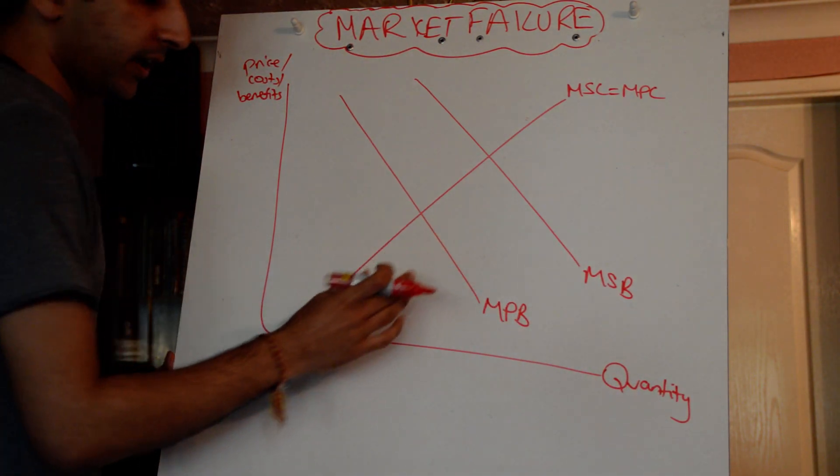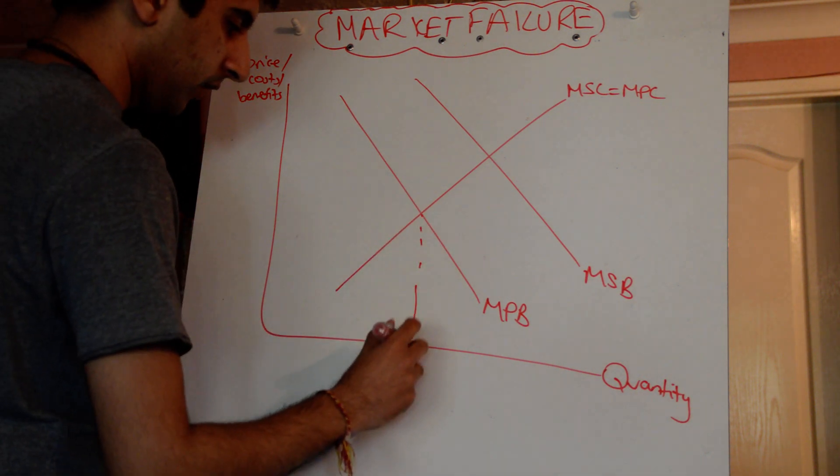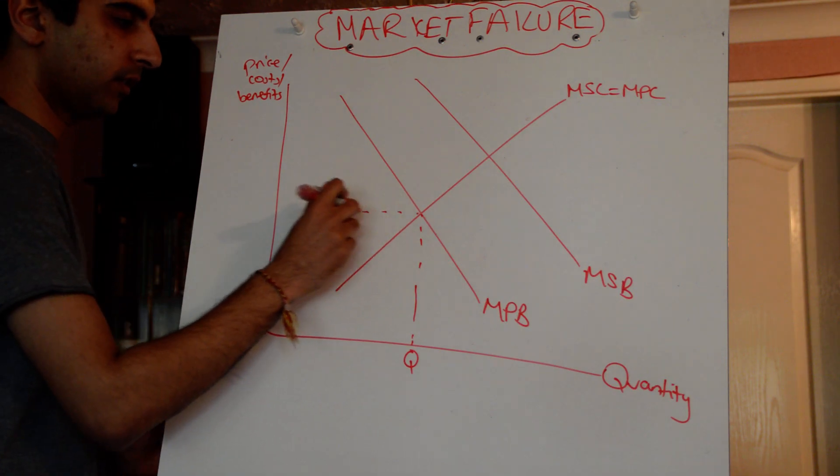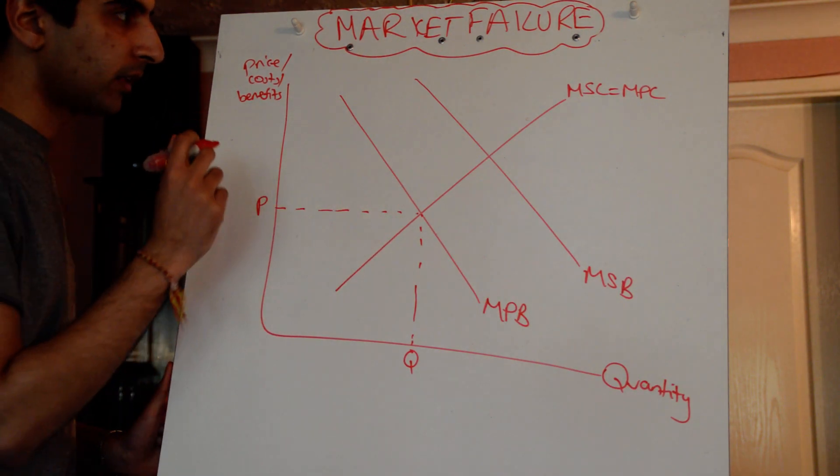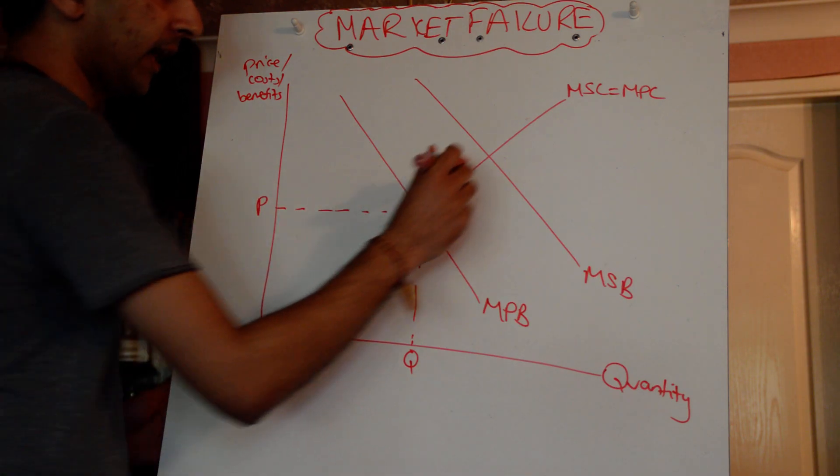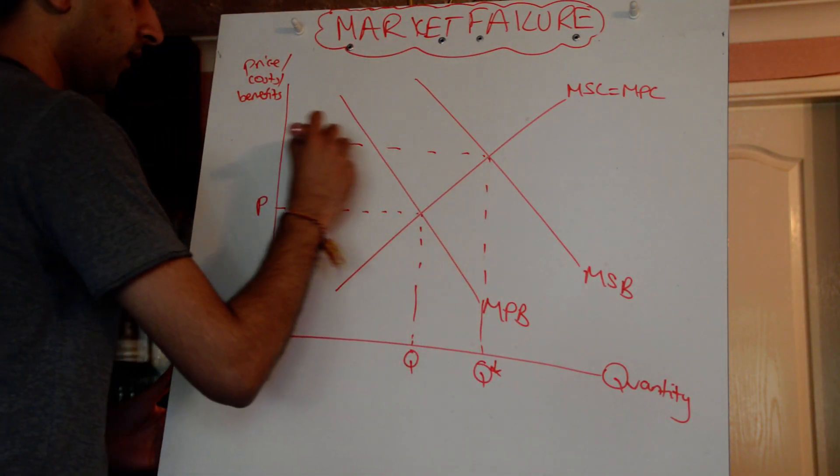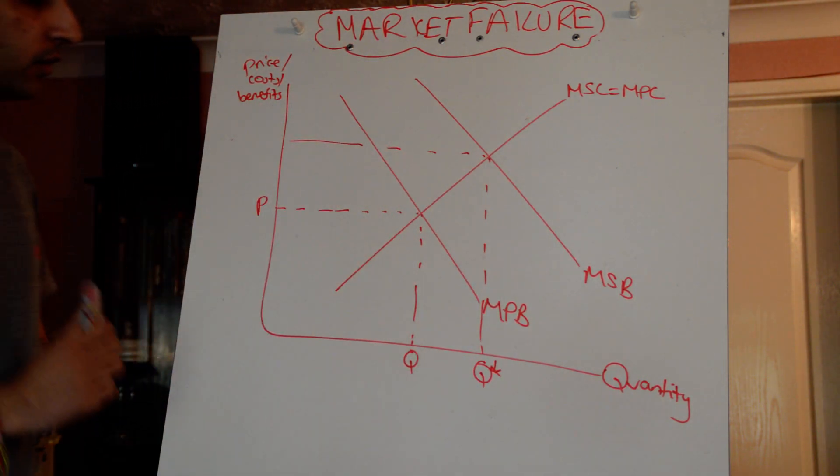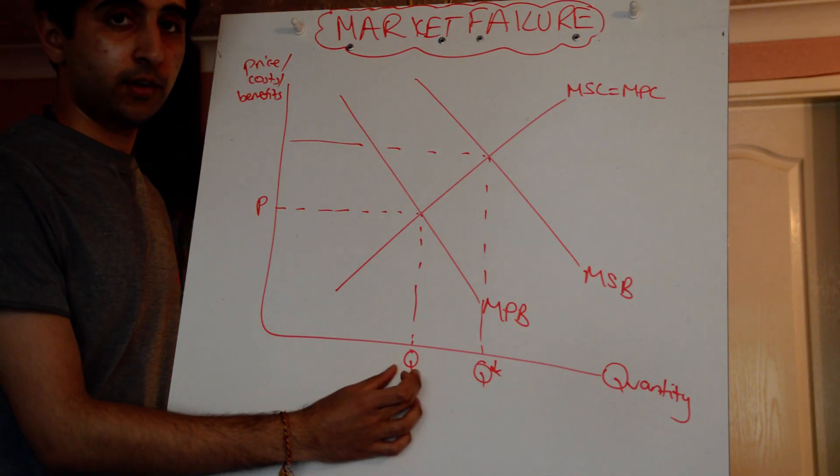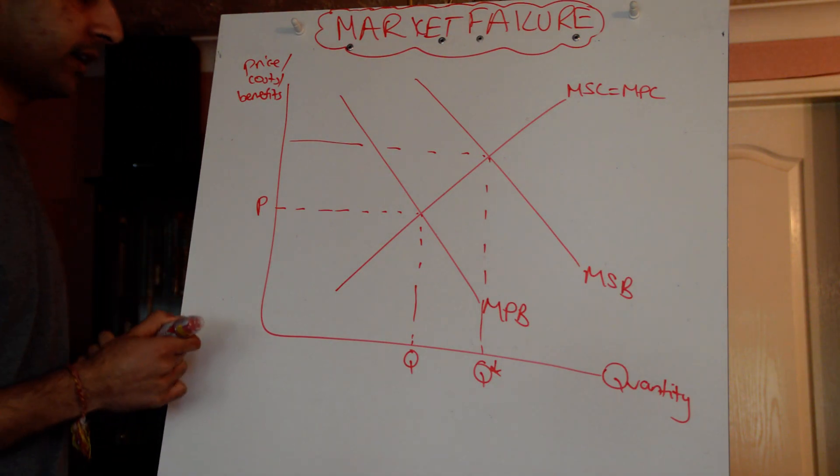So the market allocates resources at this point, only considering private benefits of economic agents, pricing at P. Whereas society would like goods to be allocated at point Q star. So that's where society would like goods allocated, that's where the market currently allocates. We've got under-provision, that's the market failing.